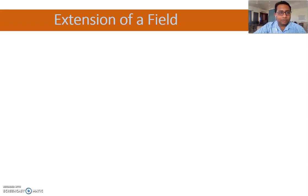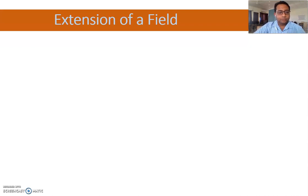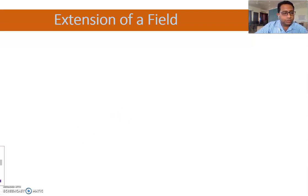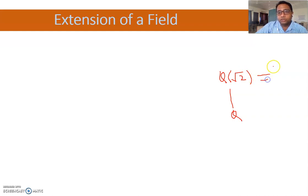The first subtopic is the Extension of a Field. पहले मैं आपको बताता हूँ कि इस topic में हम क्या करने जा रहे हैं। Basically, final हम जहाँ पर पहुँचने वाले हैं वो होगा Adjunction of Roots। इसका मतलब है कि एक field को हमने extend करना है। जैसे एक example quote करता हूँ — Q(√2) की definition है: {a + b√2 | a, b ∈ Q}।